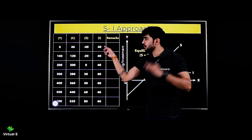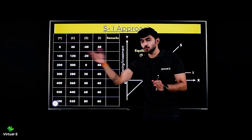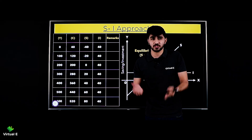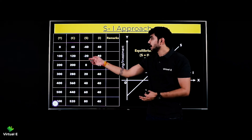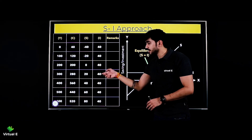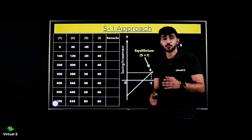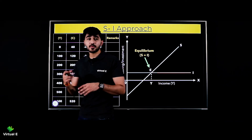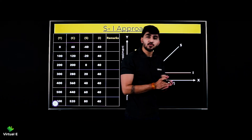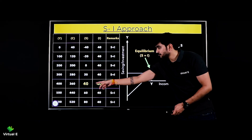First situation: when your income is zero, saving is minus 40 and investment is 40 - not equal, dono opposite sides pe hain. Minus 20 and 40 not equal, 0 and 40 not equal, 20 and 40 not equal. 40 and 40 equal - this is your point of equilibrium. Equilibrium kya? When your saving is equal to your investment.